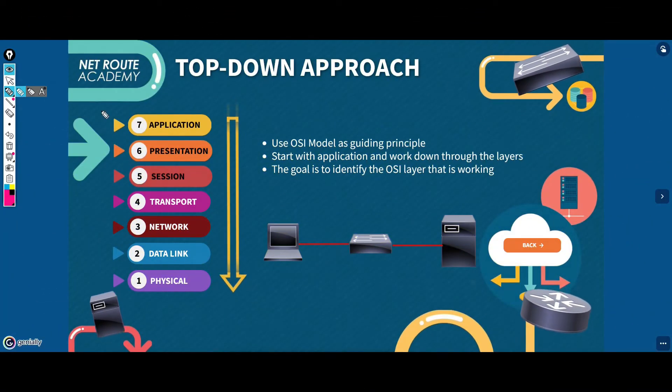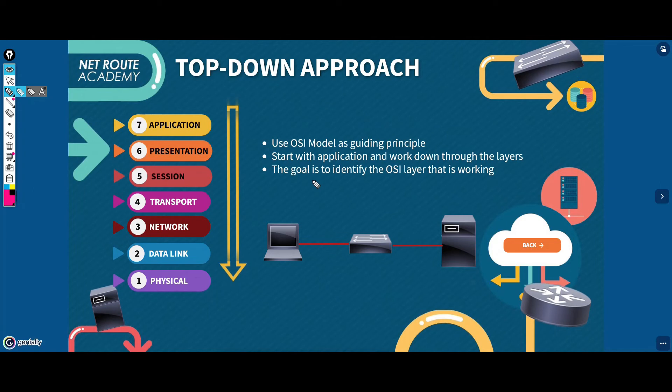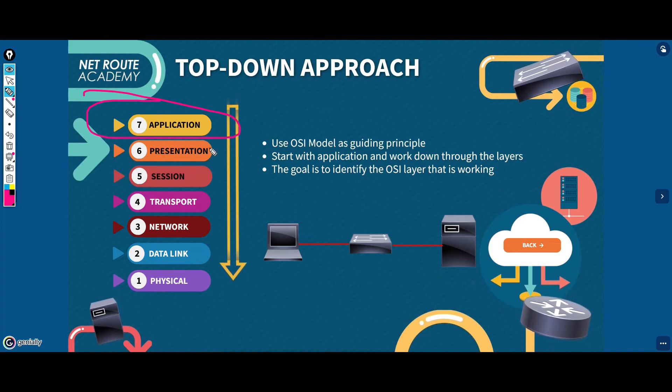The top-down approach is the most straightforward troubleshooting approach because the problems that users report are usually defined as application problems. Starting the troubleshooting process at that layer is a natural thing to do.